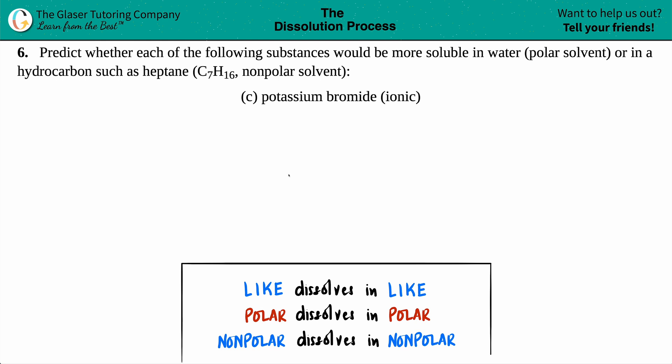Number six: Predict whether each of the following substances would be more soluble in water, which is a polar solvent, or in a hydrocarbon such as heptane C7H16, which is a non-polar solvent. And then they give us potassium bromide.